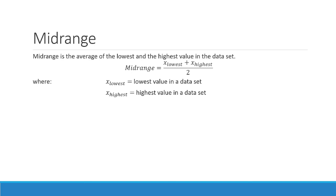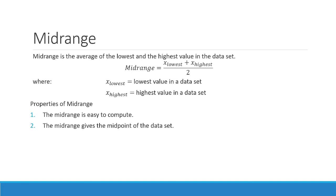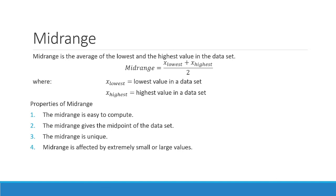Our next topic is mid-range — the average of the lowest and the highest value of the dataset. You just get the lowest value (x-lowest) and highest value (x-highest), then divide by 2. Much like range divided by 2. Mid-range is the easiest to compute measure of central tendency. Mid-range gives the midpoint of the dataset, and mid-range is unique.